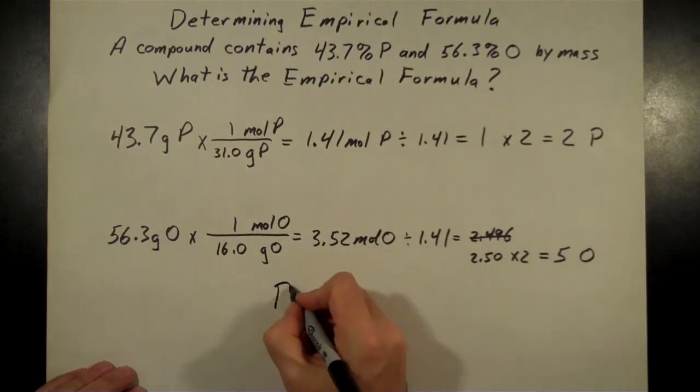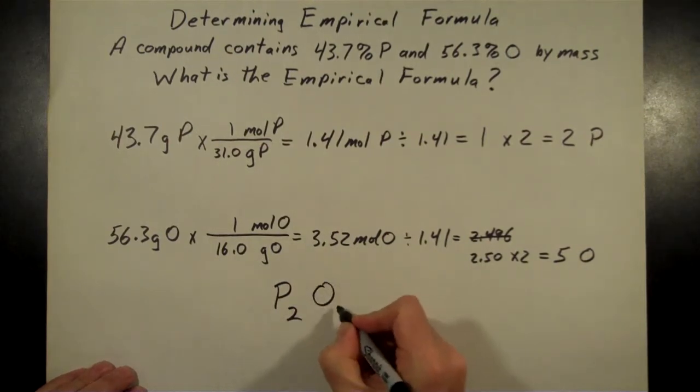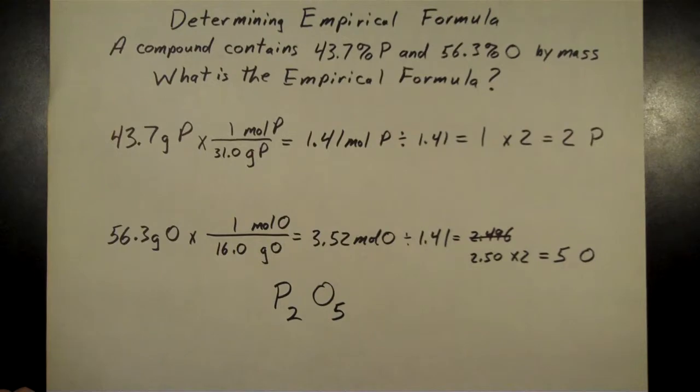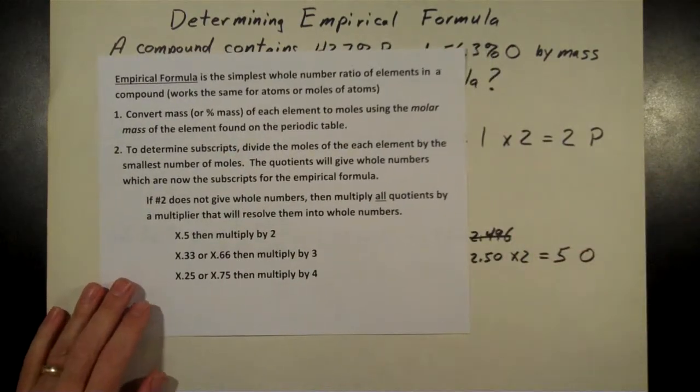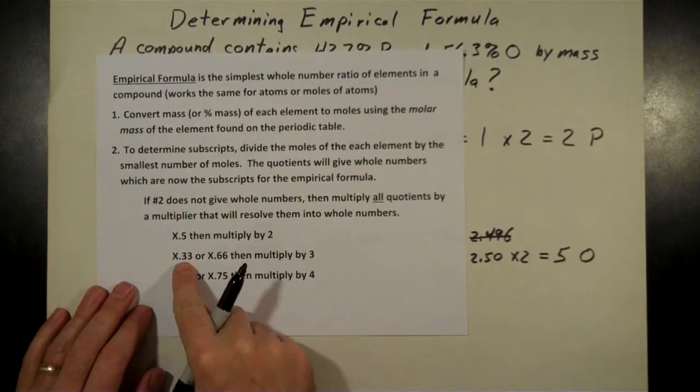If that doesn't come out to whole numbers, then you can round that off. The most common one is where you get a 0.5 in there like the 2.5 that we had.